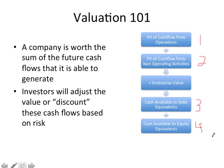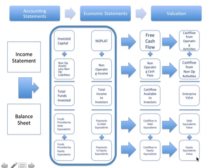Going back to last week's video, the enterprise DCF module — enterprise discounted cash flow — equals one plus two minus three equals four. That's going to be the enterprise discounted cash flow methodology we're about to go through. This is a graphical representation of the process we're going to spend the rest of the semester on.